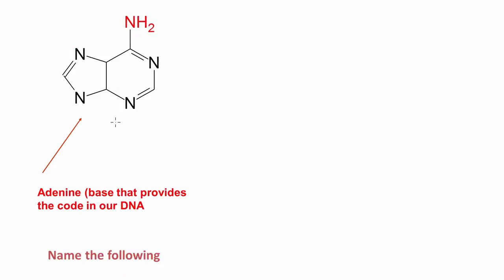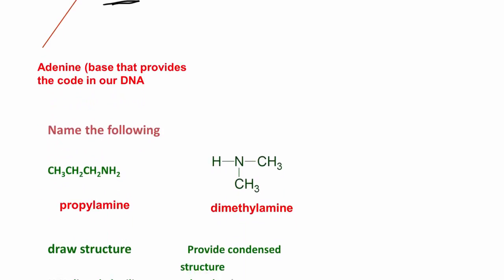Here's an example of adenine. Notice we have these two rings and this amino group. This is a base that we find in DNA, and we'll go ahead and take a look at that later. You're going to find a lot of these amines that do contain the rings.